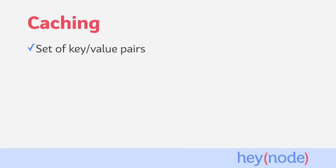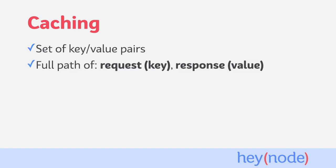The basic structure of a cache is a set of key-value pairs, where the key is a unique identifier associated with the cached value. When caching requests, we use the full path of the request as the key, including any query parameters, and the response is the cached value.